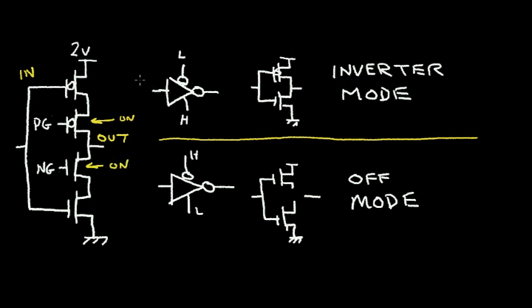That's shown by this symbol for the tri-state driver. Here, I have the gate of the NFET set high and the gate of the PFET set low. Under this condition, the tri-state driver behaves like an inverter. The circuit is equivalent to the inverter operation, and I call this the inverter mode.